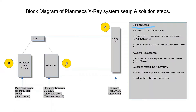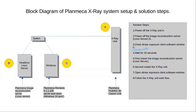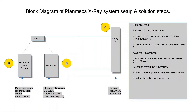With an understanding of the X-ray system setup block diagram, it will be easy to follow the solution steps. First, we need to power off the X-ray unit, represented by A. In the second step, we need to power off the image reconstruction server, represented by B. In the third step, we need to close the max exposure client software window, represented by C. Once that is done, move on to step 4, which is to wait for 25 seconds.